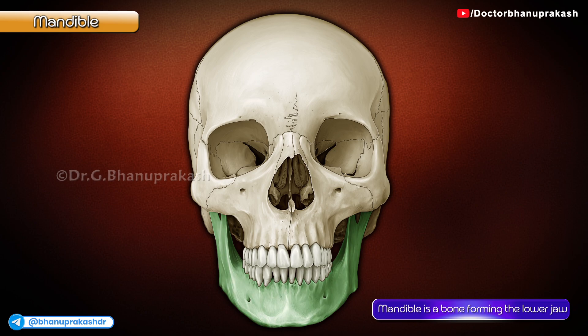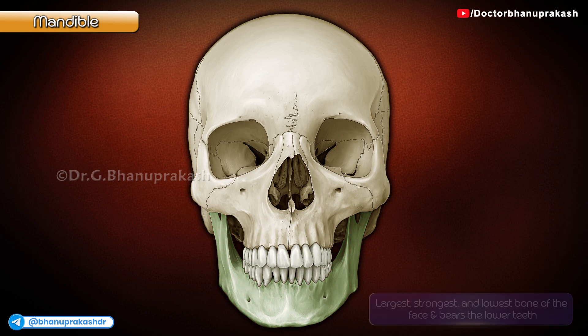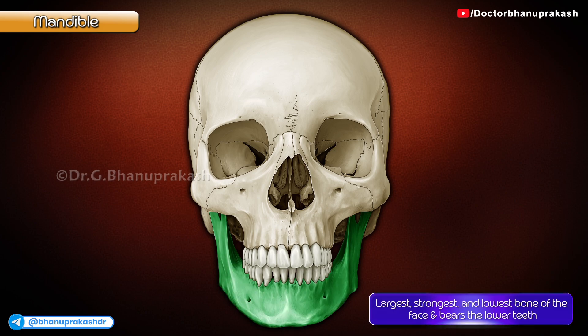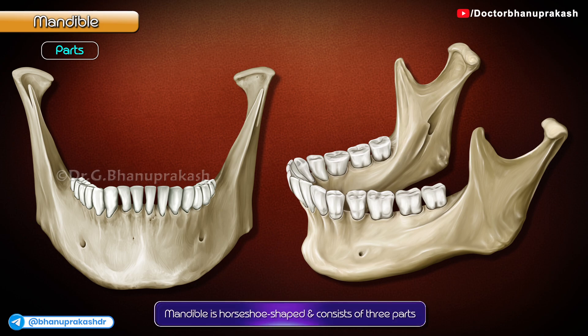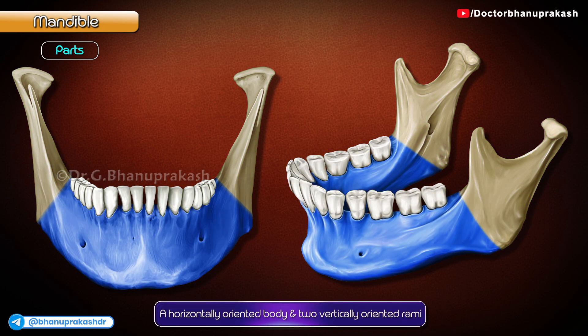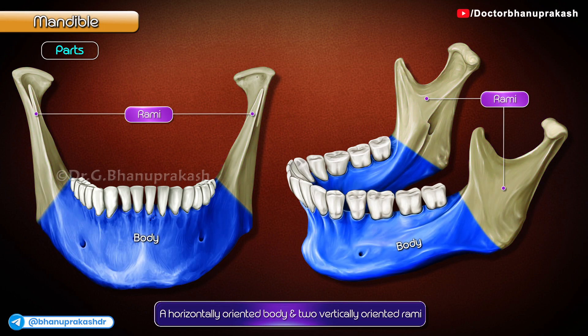The mandible is a bone forming the lower jaw. It is the largest, strongest, and lowest bone of the face and bears the lower teeth. The mandible is horseshoe shaped and consists of three parts: a horizontally oriented body and two vertically oriented rami.